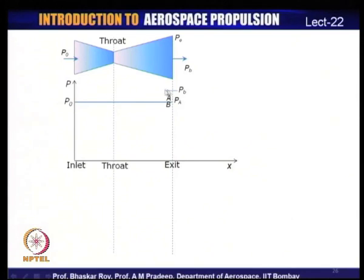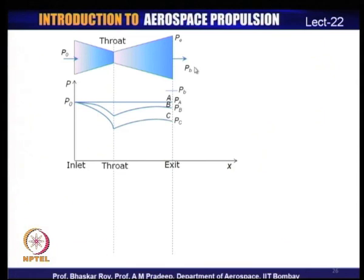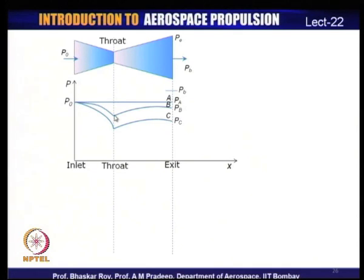When back pressure Pᵦ is close to reservoir pressure P₀, flow begins. As back pressure is reduced but remains greater than the critical pressure, static pressure reduces and velocity increases in the converging section; in the diverging section the static pressure increases again.